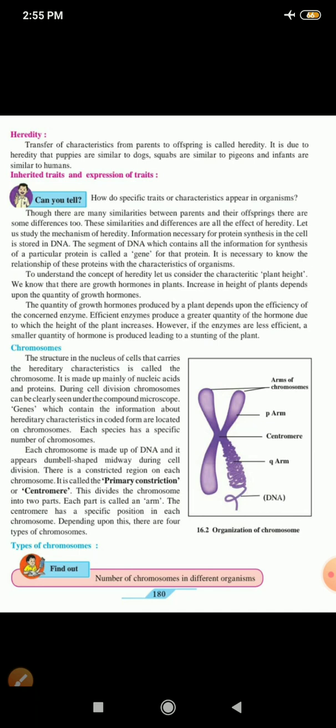To understand the concept of heredity, let us consider the characteristics of plant height. We know that there are growth hormones in plants. Increase in the height of plants depends upon the quantity of growth hormones. The quantity of growth hormones produced by a plant depends upon the efficiency of the concerned enzyme. Efficient enzymes produce a greater quantity of hormone due to which the height of the plant increases. However, if the enzymes are less efficient, a small quantity of hormone is produced leading to a stunting of the plant. Stunting means short or dwarf plant.